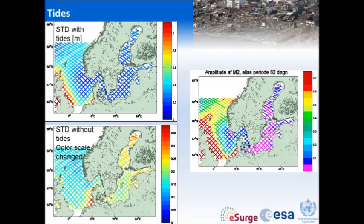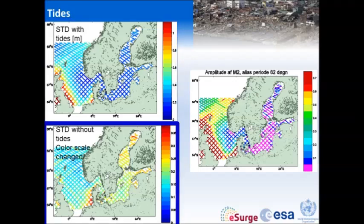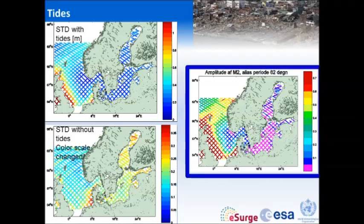After taking out the tides, there is quite a large change — standard deviations go from more than a meter down to about 30 centimeters. This is also an example of the amplitude of the M2 tide, which is the most important tidal component in the North Sea. In the Baltic Sea the tides are small, so the difference there is just a change of color scale.